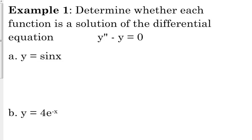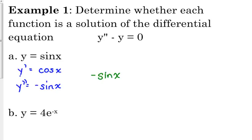Let's get to the second derivative. The first derivative of sine is cosine, and the derivative of cosine is negative sine. So y double prime is negative sine of x. Now, y double prime minus y: negative sine of x minus sine of x. Does that equal 0? No, that is negative 2 sine of x, which is not equal to 0.